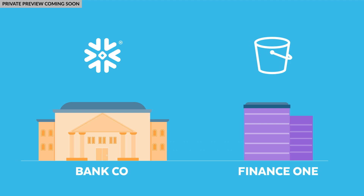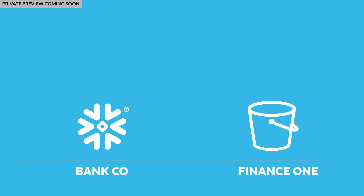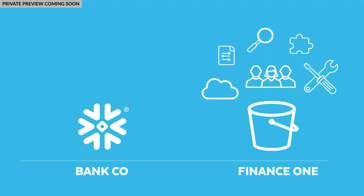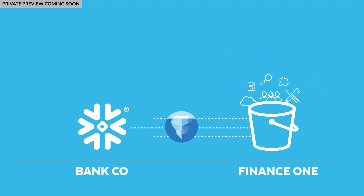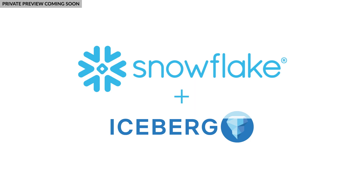Our company now has data in two places. While BankCo wants to work with Finance One data just as they would with any other Snowflake table, we do not want to disrupt teams and other tools that are working with Finance One's Parquet data directly. With Iceberg Tables and Snowflake, we can achieve both goals. Iceberg Tables extend the features of Snowflake's platform to Finance One's Parquet data, providing benefits such as governance alongside the interoperability that an open table format provides.